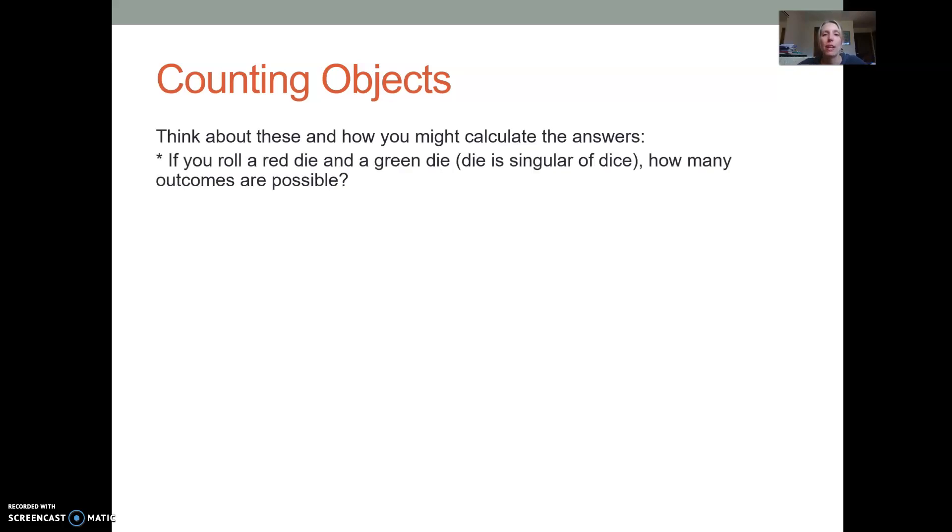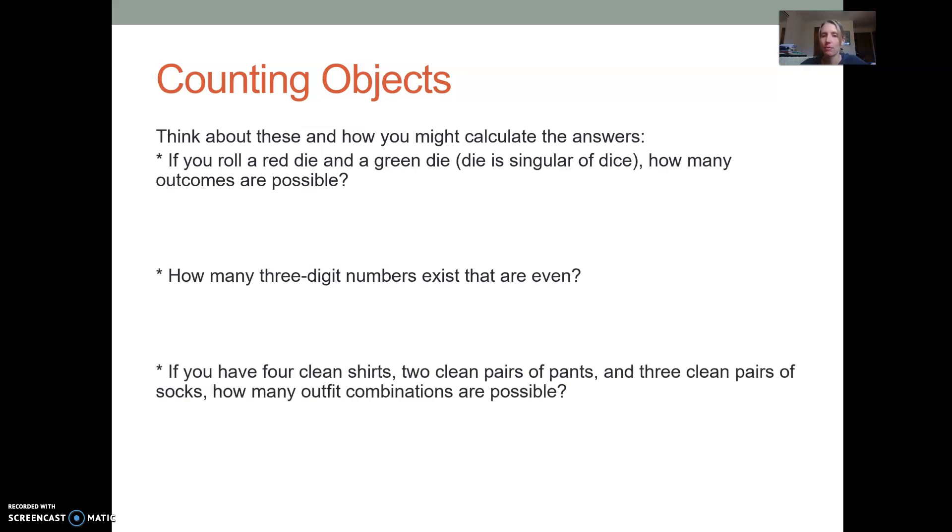First, if you roll a red die and a green die, so die is the singular of dice, how many outcomes are possible? Second, how many three-digit numbers exist that are even? And third, if you have four clean shirts, two clean pairs of pants, and three clean pairs of socks, then how many different outfit combinations do you have? So pause the video now and see what you come up with.